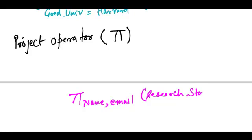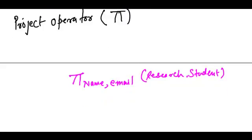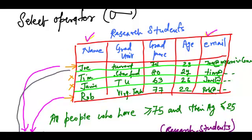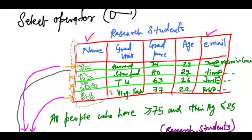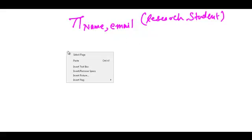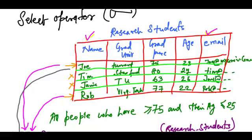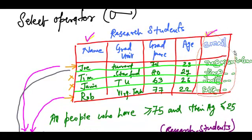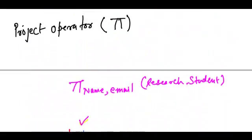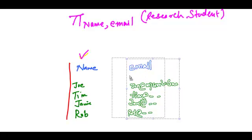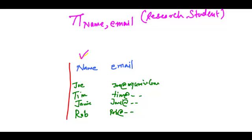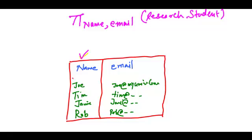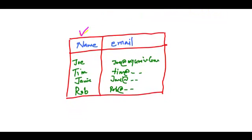So what I would get is this table. And the result of this operation would be a table that has only two attributes: the name attribute and the email attribute.